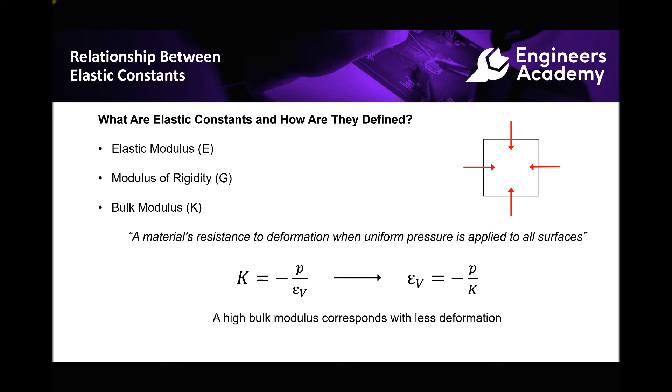If the pressure is positive, the volumetric strain is going to be negative and vice versa. By rearranging this equation, we can tell that a high bulk modulus corresponds with less deformation. Because if uniform pressure is applied and we are dividing by the bulk modulus of the material, the higher the bulk modulus, the lower the volumetric strain, and a lower volumetric strain basically means less deformation.